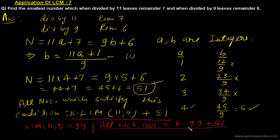So the next bigger number will be 99 + 51 = 150. We can keep putting different values of k to get all the higher numbers that satisfy this condition. We will see more examples in the next class.